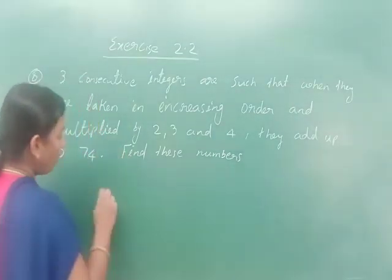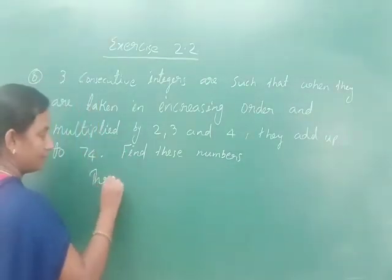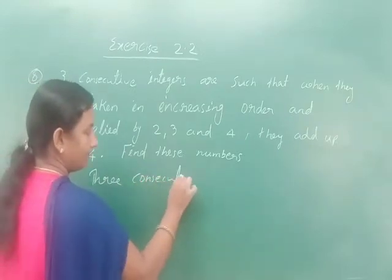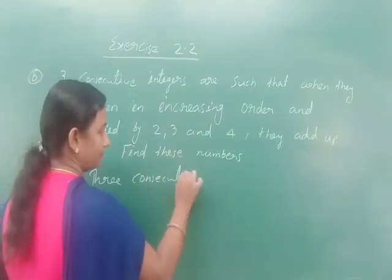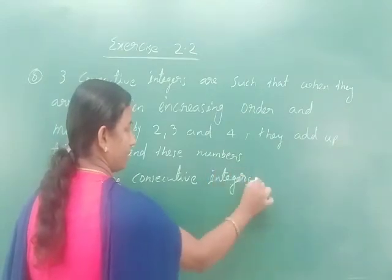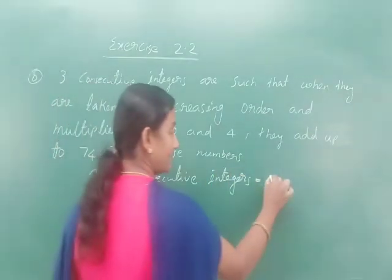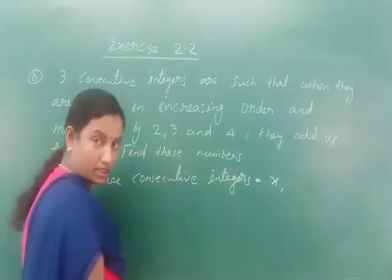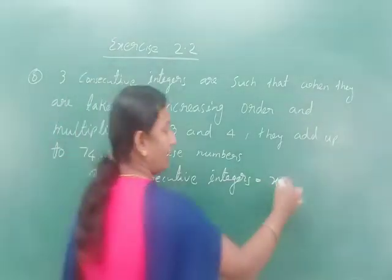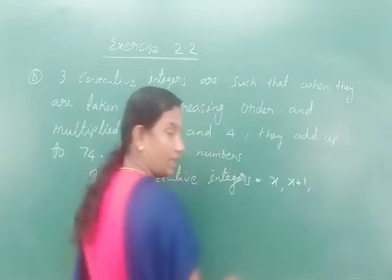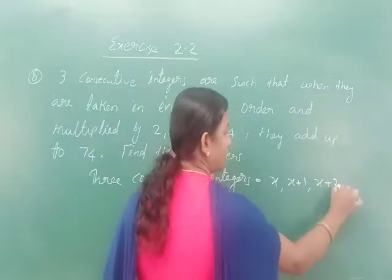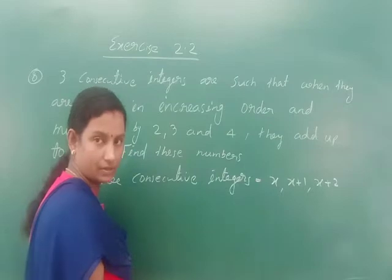So, 3 consecutive integers — we can take them as x, x+1, and x+2, since consecutive integers are continuous numbers. These are the 3 consecutive integers.